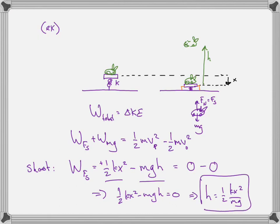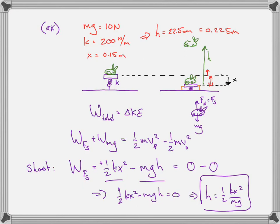For those who like numbers: if the bunny weighs 10 newtons, we use the same spring of 200 N/m, and we set it 15 centimeters down from equilibrium, we get h = 22.5 centimeters. So the bunny only goes about 7.5 centimeters higher than where it started — not a very good bunny launcher. To make it go higher, increase the spring constant. If we increase it by a factor of 10 to 2,000 N/m, now the bunny goes 2.25 meters in the air — that's fun.